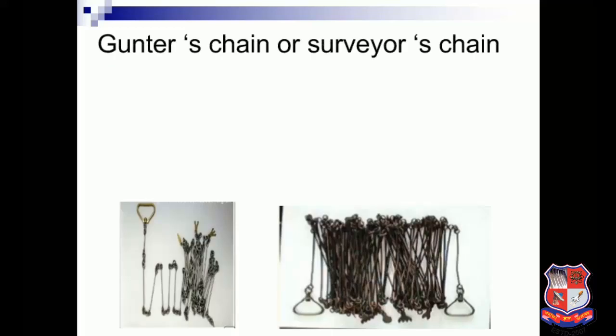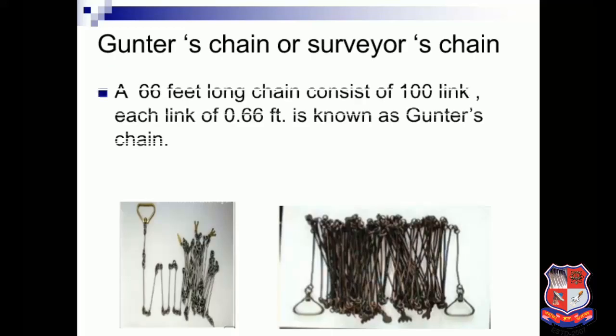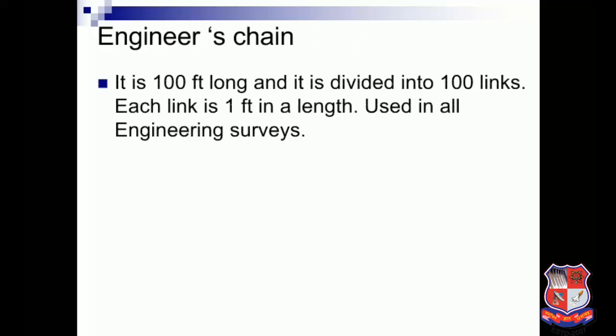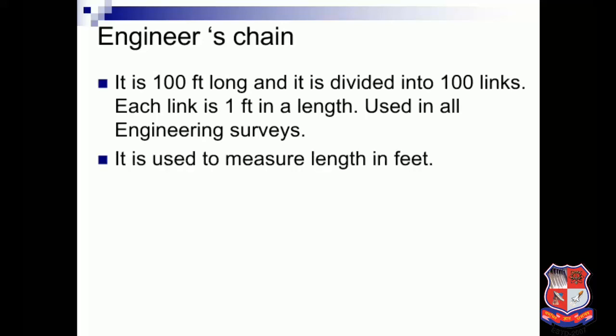A Gunter's chain, also called the surveyor's chain, is 66 feet long and consists of 100 links, each link being 0.66 feet. It is suitable for taking lengths in miles and areas in acres. The engineer's chain is 100 feet long, divided into 100 links each of 1 foot in length, and is used in all engineering surveys to measure lengths in feet.